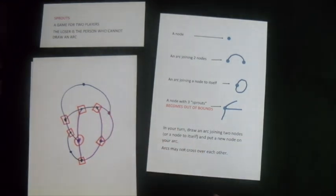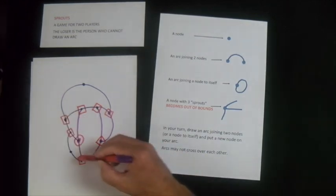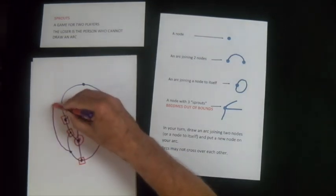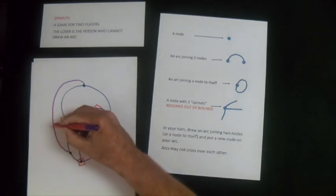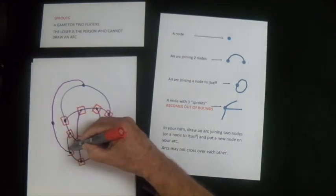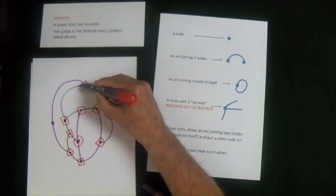Nor can that one, actually. Oh, no, that one can't either. I'm going to join that one to that one. Oh, and I've got to put a new node on it, of course. And I'm marking that one as out of bounds, and that one as out of bounds.